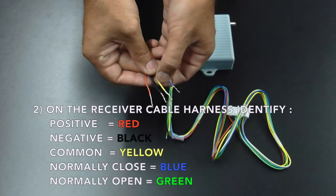On the receiver, identify the red for positive, the black for negative, the yellow for common, the blue for normally closed, and the green for normally open.